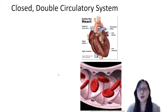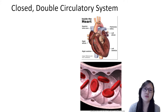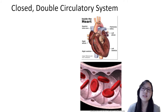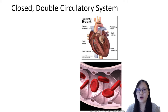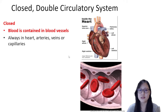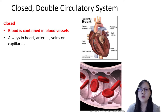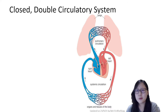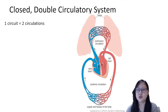When we talk about the human circulatory system, we often refer to it as a closed double circulatory system. 'Closed' means that the blood is contained in the blood vessels — red blood cells are always inside the vessels, whether in the heart, arteries, veins, or capillaries. 'Double' refers to the fact that blood passes through the heart twice in one complete circuit.